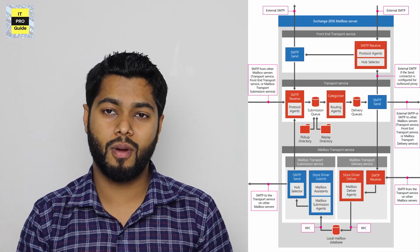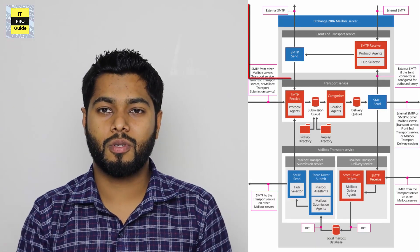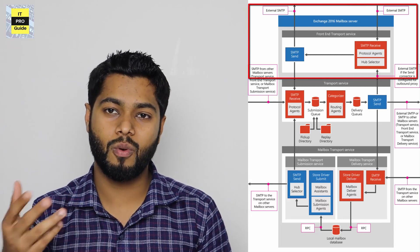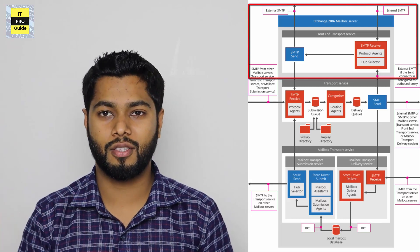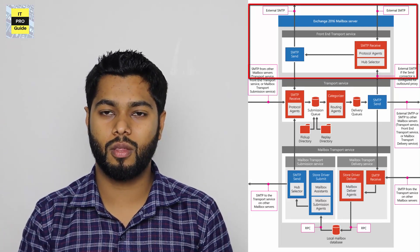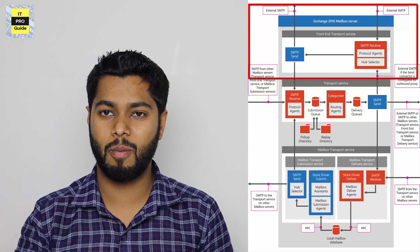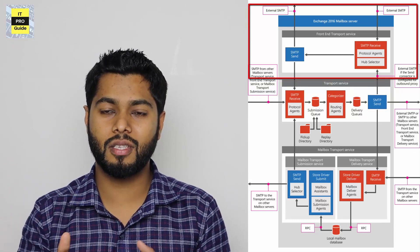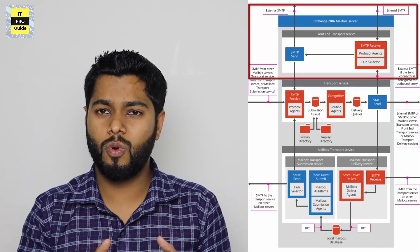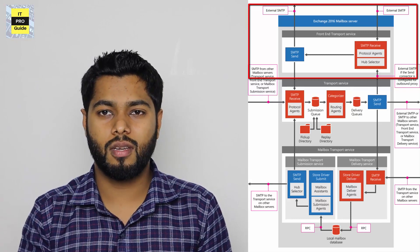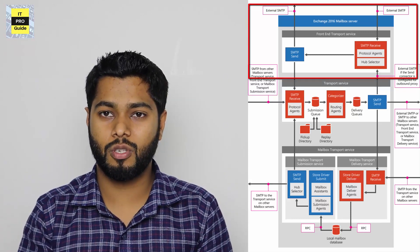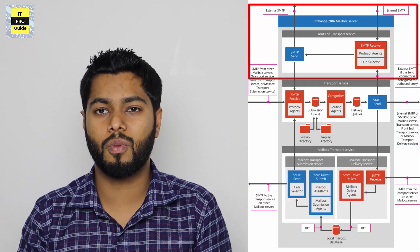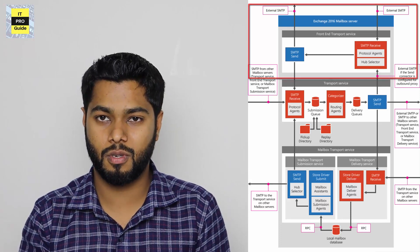Let's go through them one by one. First, the frontend transport service is responsible for receiving email from outside your organization. It communicates with your secure email gateway or the outside internet and receives the email. It works like a proxy — it doesn't do any content inspection or categorization. Once it gets the email, it just passes it to the transport service.